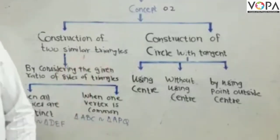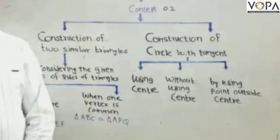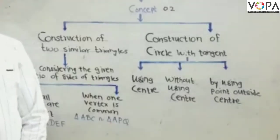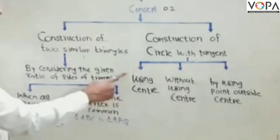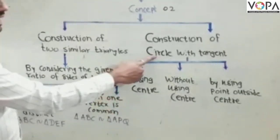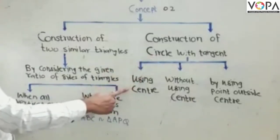In second concept of this chapter, we discuss the construction of circle with tangent. Here we draw this tangent by using three different conditions. In first condition, we draw the tangent of the given circle by using center.